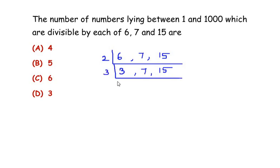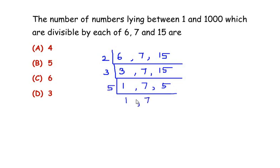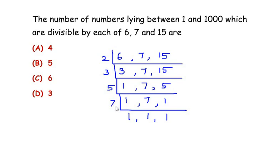Taking the next prime number as three: three one times is three, seven does not go in the table of three so seven stays, and three five times is fifteen. Taking the next prime as five: five one times is five, seven does not go in the table of five so it comes down as is, and five one times is five. Finally, seven one times is seven — seven is also a prime number.